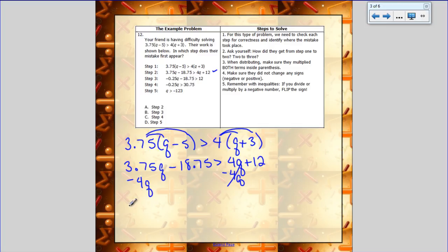And I get negative 0.25Q minus 18.75 is greater than 12, and so I'm going to look at my next step, step 3. That matches what I just did, so we're good.